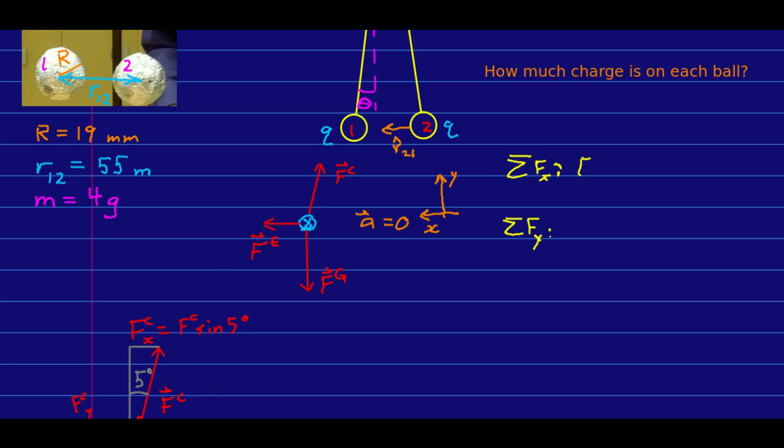Now I can write my equation of motion. In the x, I simply have Fe minus Fc sine 5 degrees. And in the y, all I have is... and everything is static, so the acceleration is zero. So far so good, but let's strategize for how we're actually going to get to what we want. We want to solve for q.